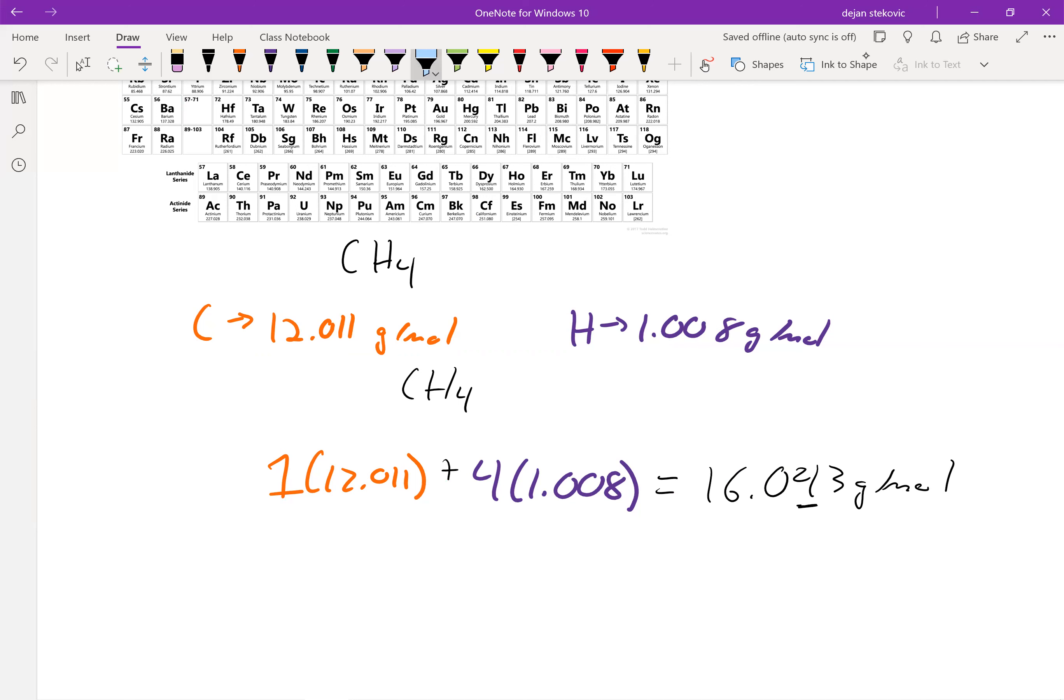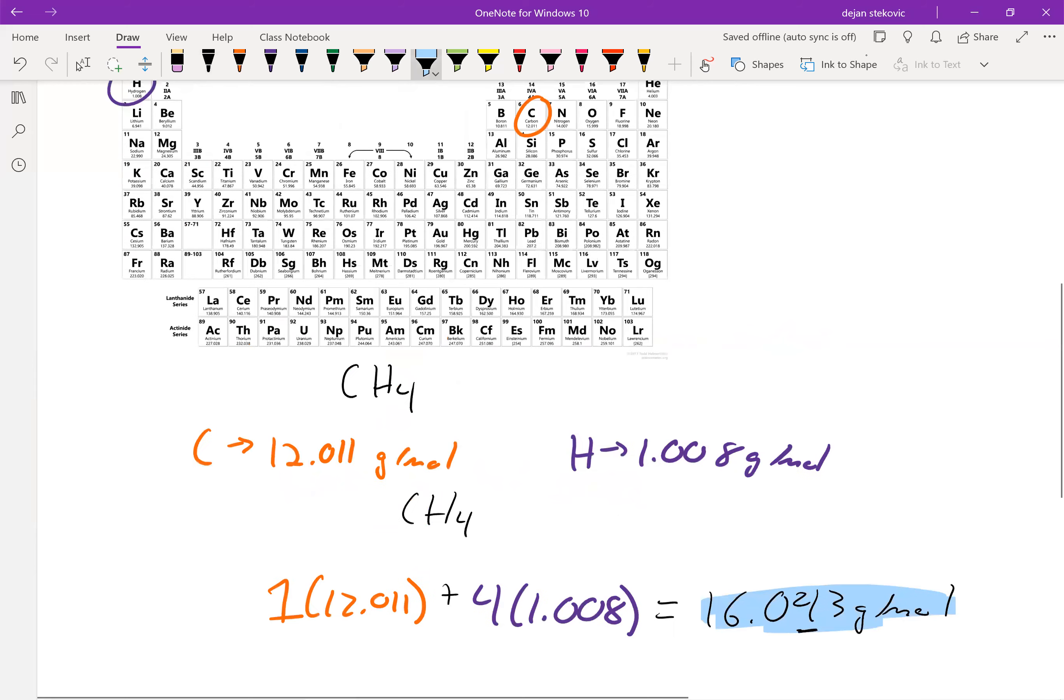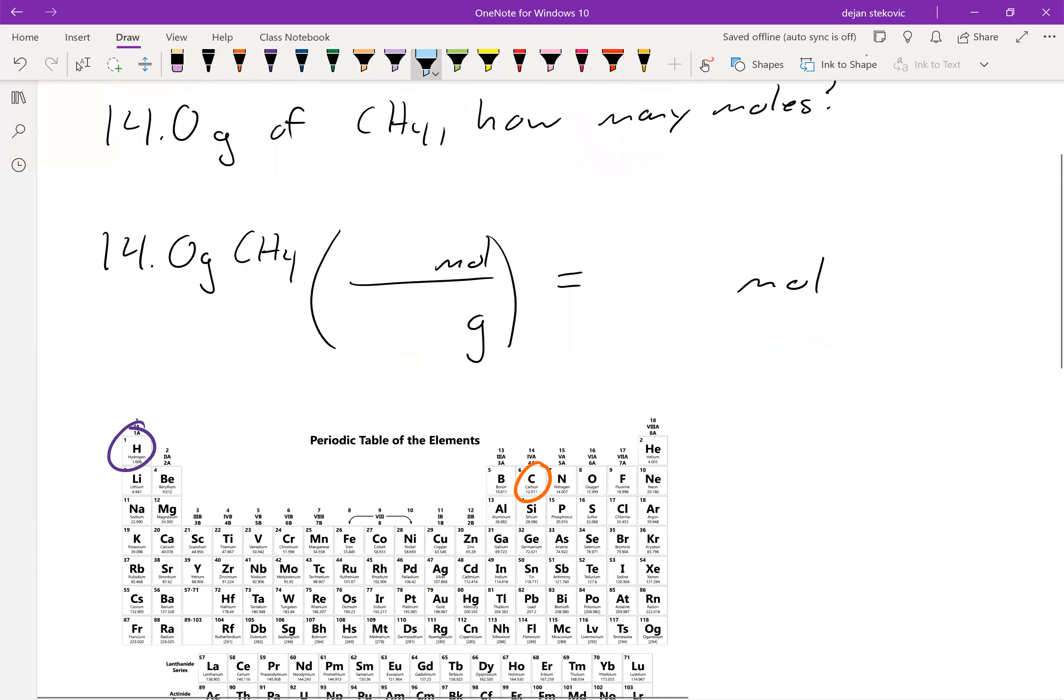And so then we're just going to take this number and plug it in there, 16.043, 16.043 grams per one mole. Go ahead and do the math. And you'll end up with 0.873 moles, in this case of CH4, right?